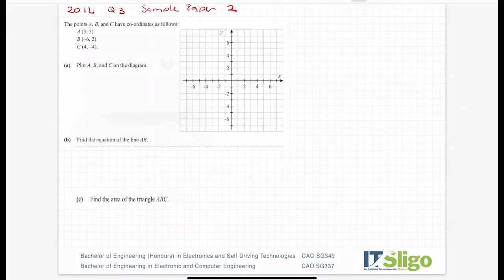2014 question on coordinate geometry on the Leaving Certificate ordinary level course, this one is taken off a sample paper. The points A, B and C have coordinates as follows: A is (3,5), B is (-6,2), C is (4,-4). Plot A, B and C on the diagram. Okay, let's give that a shot.